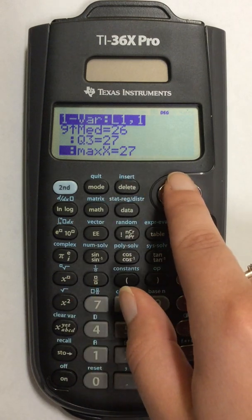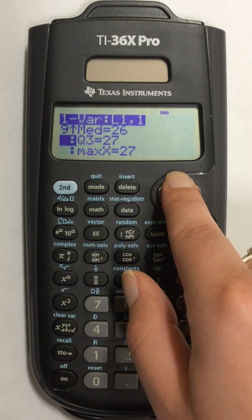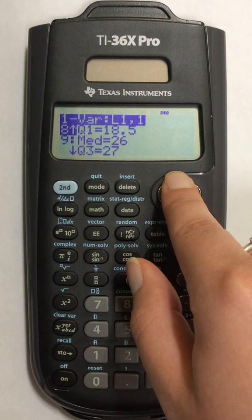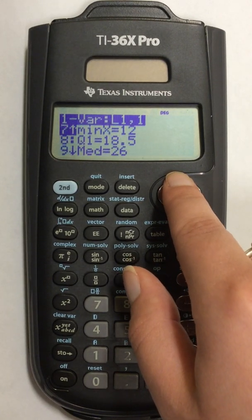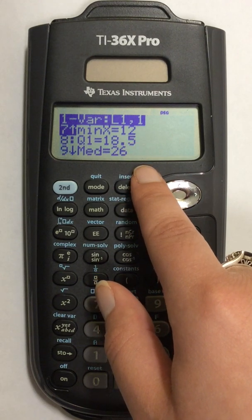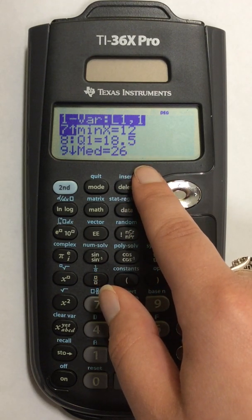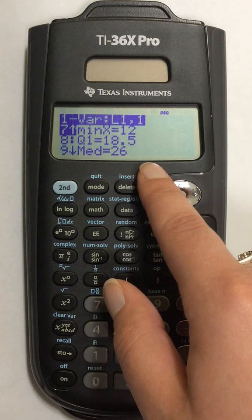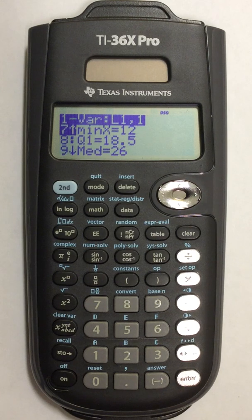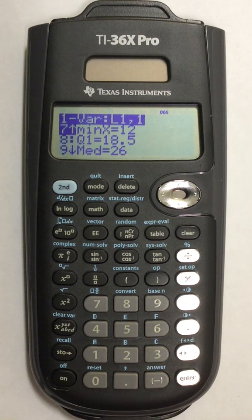So these five numbers at the bottom are the values for your five number summary. You can write these numbers down and then use them to create your box plot. This is how to find the values for the five number summary in your scientific calculator.